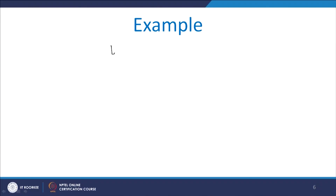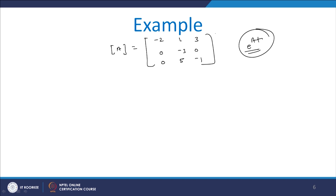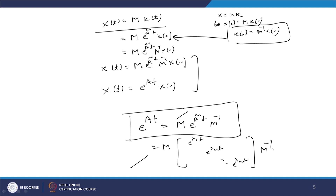Let the given matrix A be: [−2, 1, 3; 0, −3, 0; 0, 5, −1]. Our main purpose is to determine e^(At) using the diagonalization approach. In this approach, we need the modal matrix M. The modal matrix depends upon the eigenvalues and eigenvectors. So the first step is to calculate the eigenvalues of this matrix.